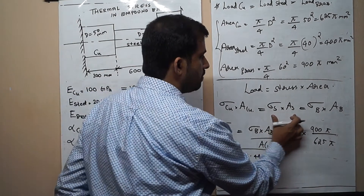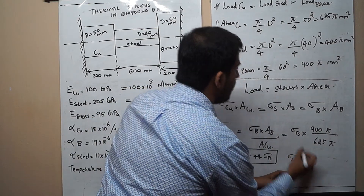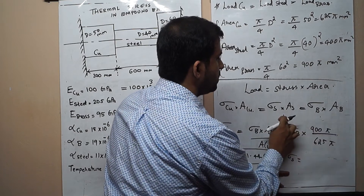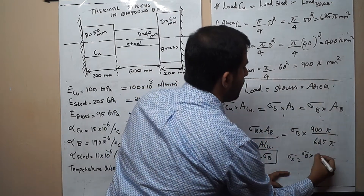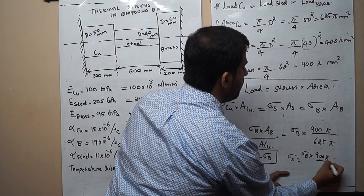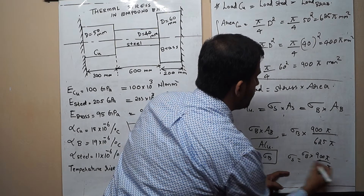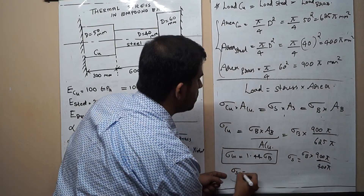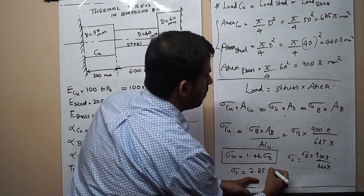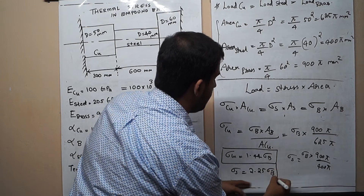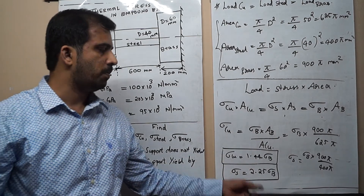Similarly, equating load on steel and load on brass: σ_steel = σ_brass × (A_brass / A_steel) = σ_B × (900π / 400π) = 2.25 σ_B. So now we have two expressions: σ_copper = 1.44 σ_B and σ_steel = 2.25 σ_B.